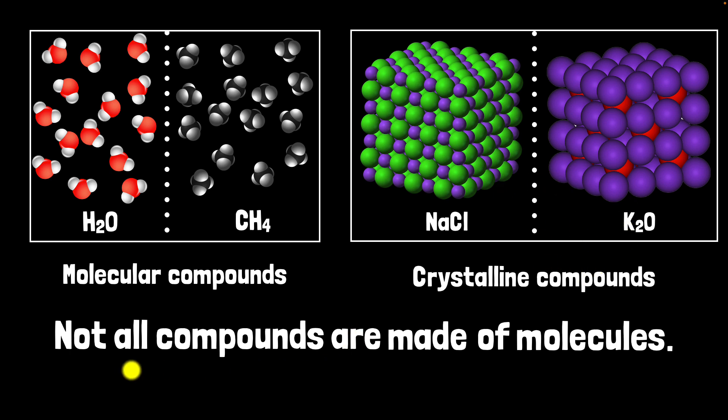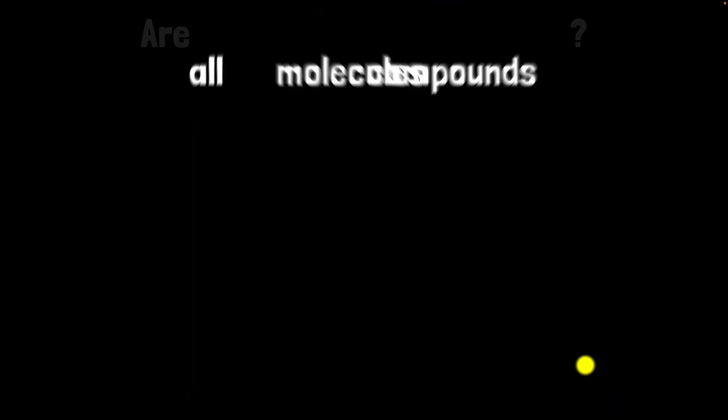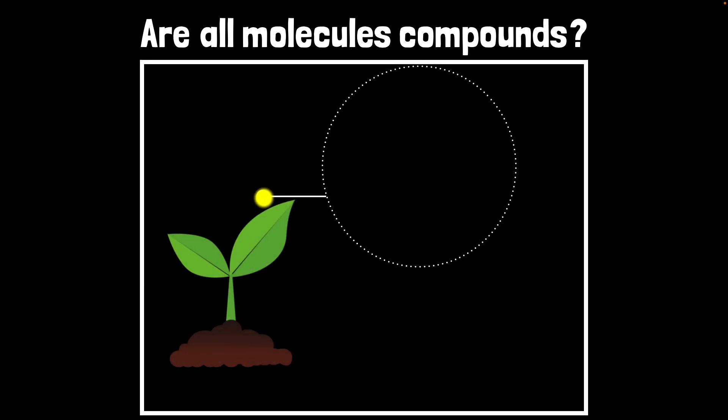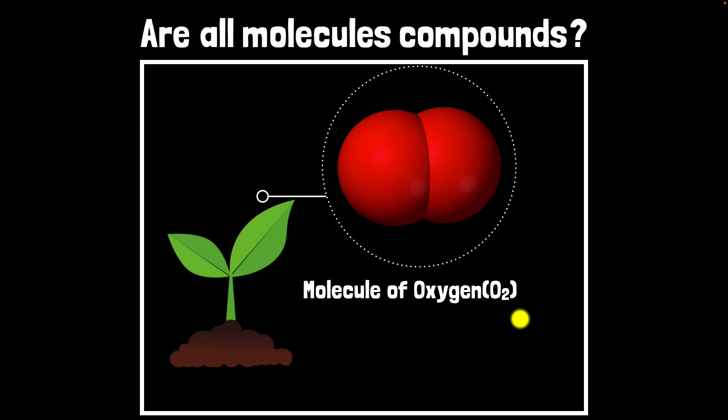But here's an interesting question. Not all compounds are molecules, right? But what about the other way around? Are all molecules compounds? Well, let's see. Let's take an example. What if you were to zoom into oxygen? Well, we'll find that two atoms of oxygen are combined together to form O2, which is a molecule of oxygen. And of course, you'll find trillions and trillions of them. But the big question is, is this a compound? The answer is no, it's not a compound. Because remember, compounds are chemical combination of two or more different elements. Here, there's a chemical combination of the same element. Oxygen and oxygen is getting combined. So it's a molecule, but it is not a compound.